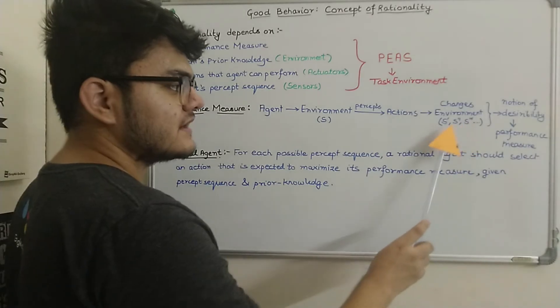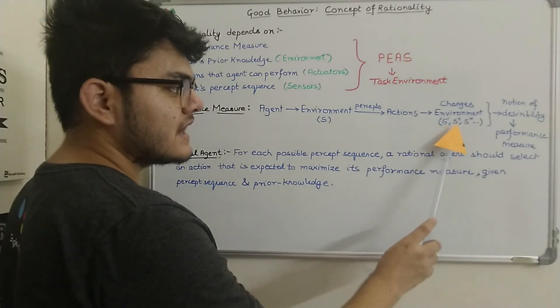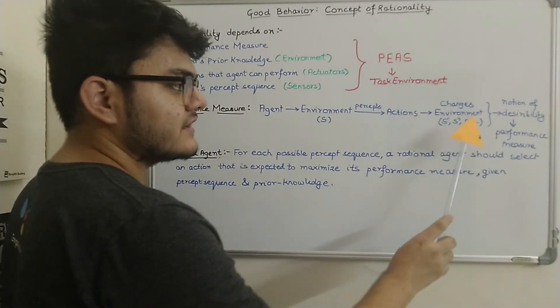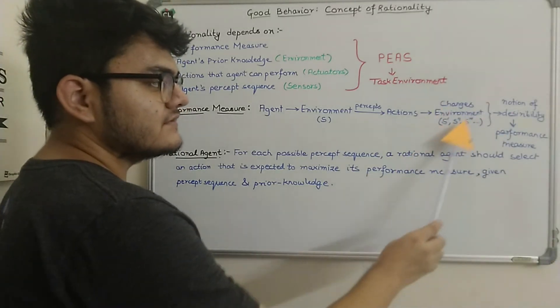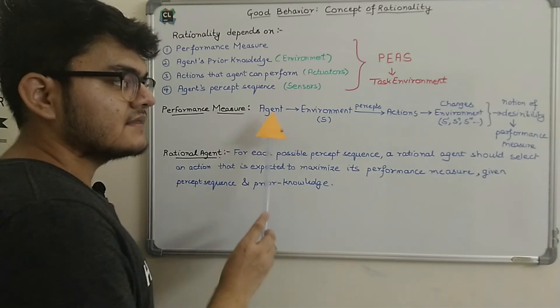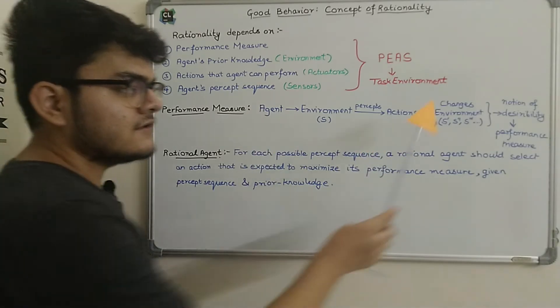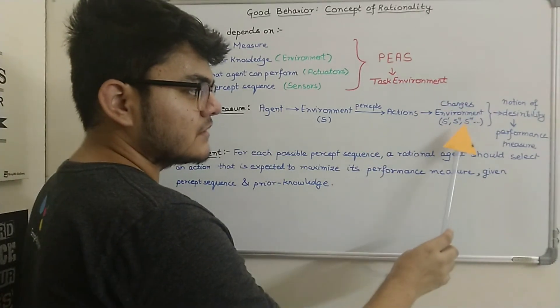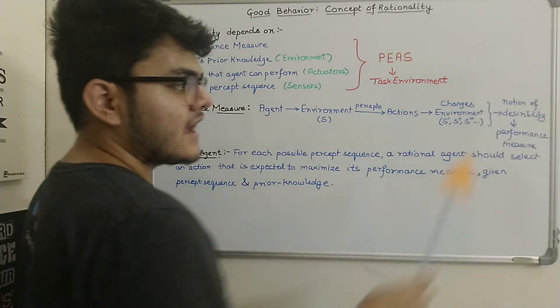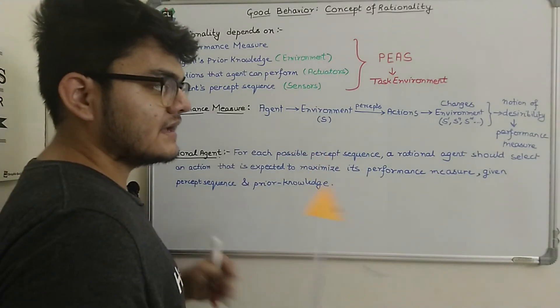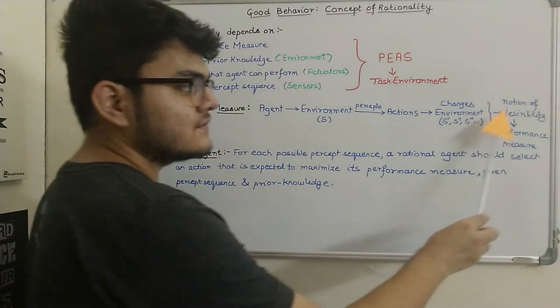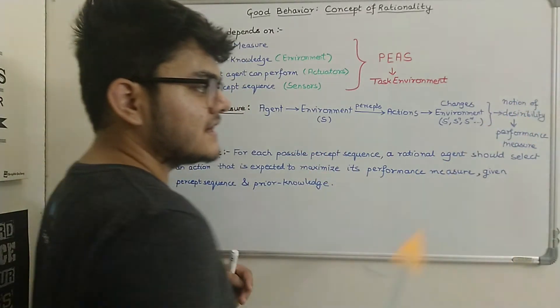These are the actions that it will take from the environment, and this makes the environment change from state S to some variety of states that I've written here: S dash, S double dash, S triple dash and so on. So it is a sequence of changes in the environment by the agent. Now, if these changes in the environment are desired actions or the desired changes that I really wanted the agent to make,